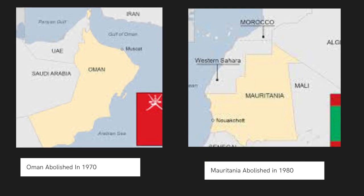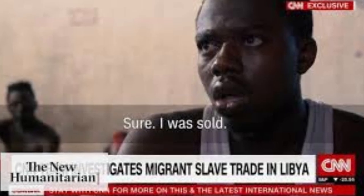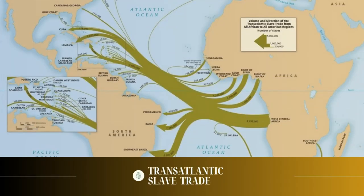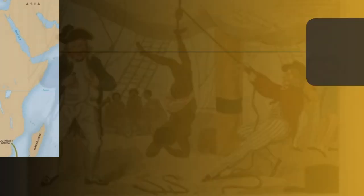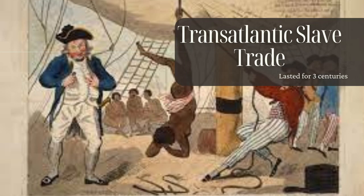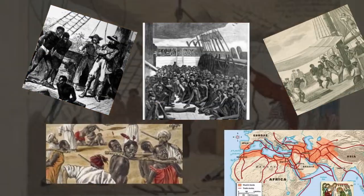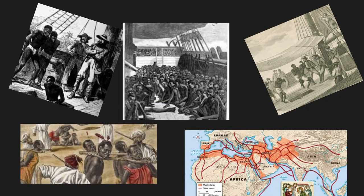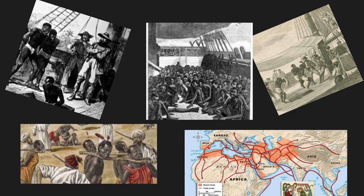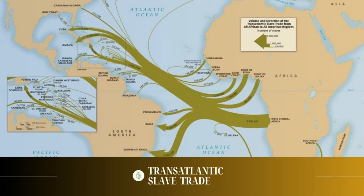Saudi Arabia and Yemen officially abolished slavery in 1962, while Oman followed in 1970. Mauritania became the last state to abolish slavery in 1980. In contrast, European involvement in the transatlantic shipping to the Americas lasted for over three centuries. Both the transatlantic and the Arab slave trades were equally brutal and destructive, and it's only fair to acknowledge both in equal measure.